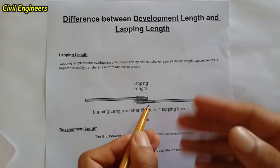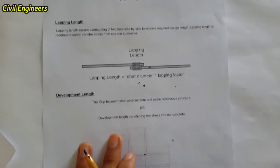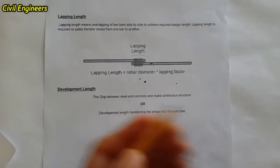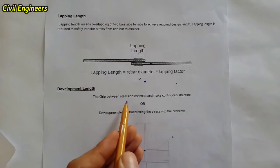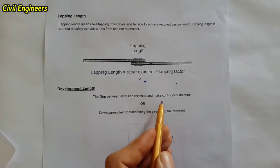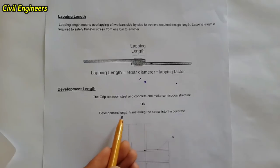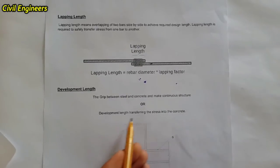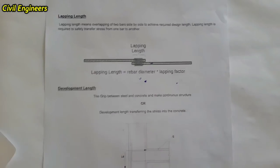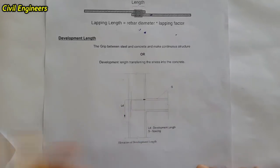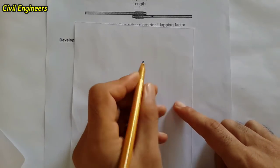The other concept is called development length. Development length refers to the grip between steel and concrete that makes a continuous structure. We can also define development length as the length required for transferring stress into the concrete. Here is the diagram to illustrate this concept.